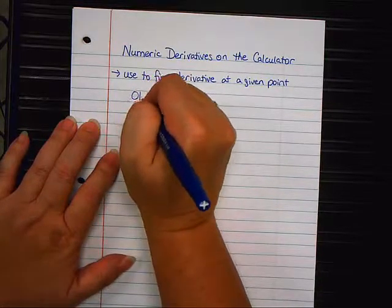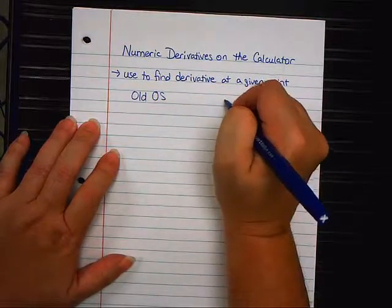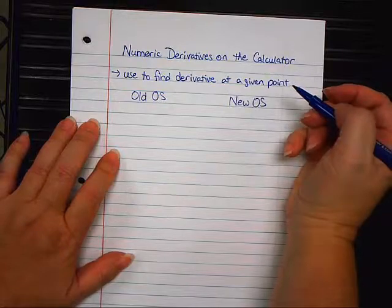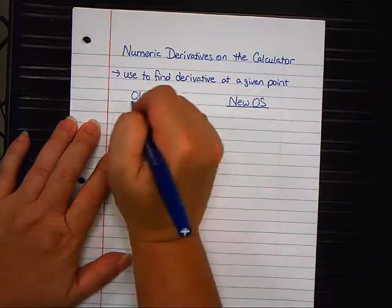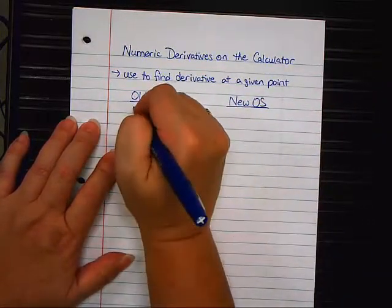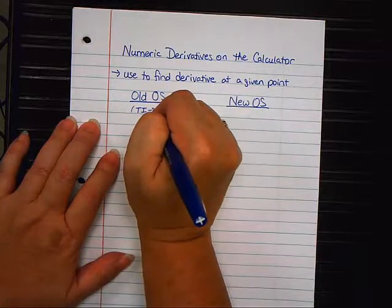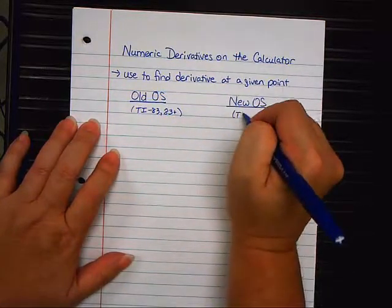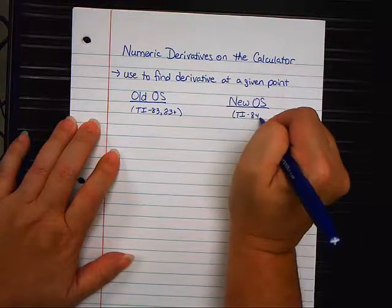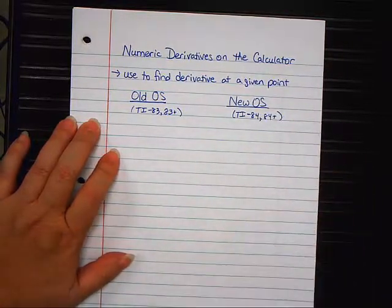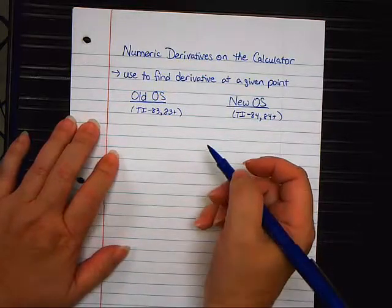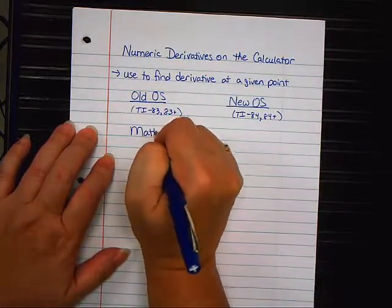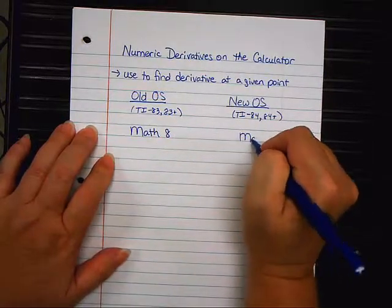I am going to write down old OS and new OS. Do you think you know what OS means? Operating system, exactly. This is for those of you who have a TI-83 or an 83-plus calculator. This one is for those of you who have a TI-84 or an 84-plus calculator with a new operating system on it. For both calculators, you are going to type math 8.